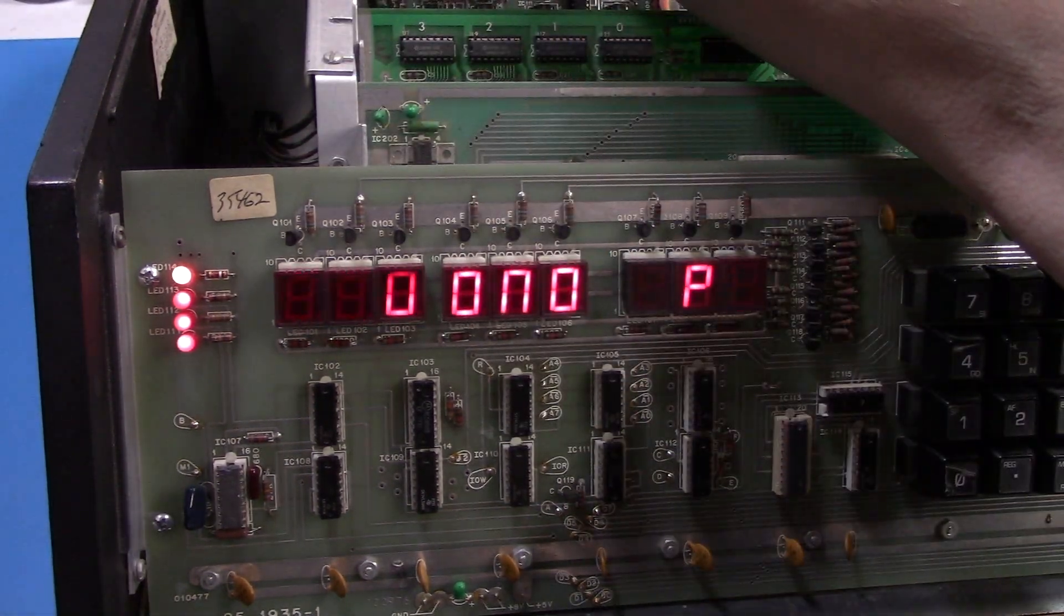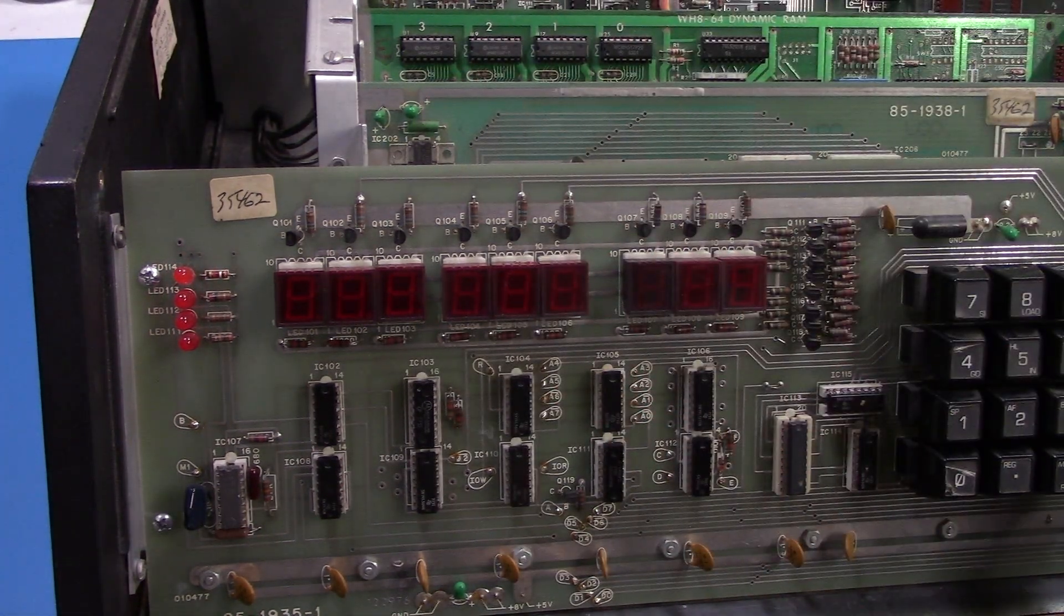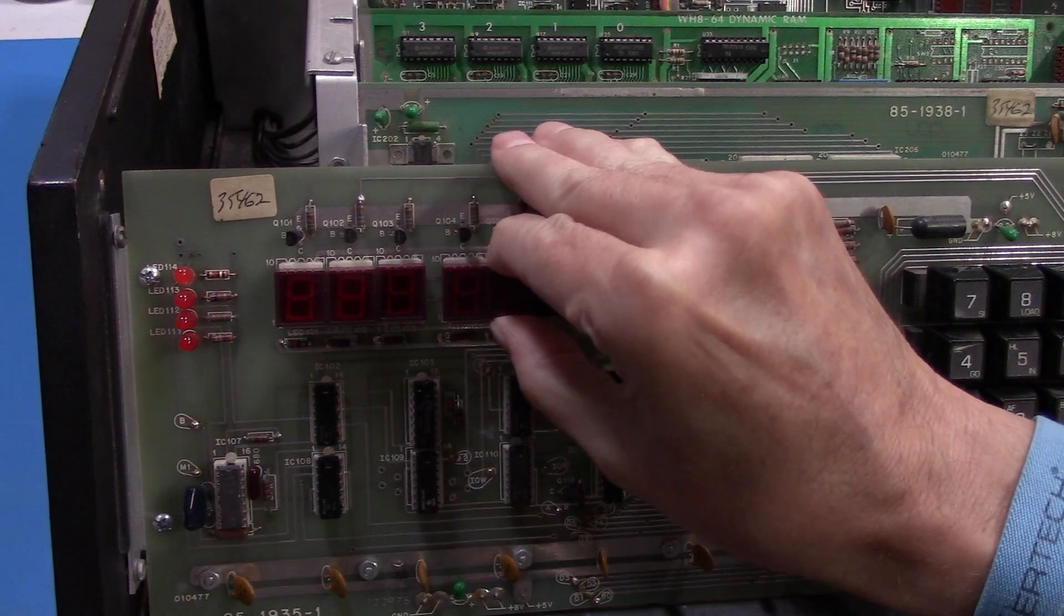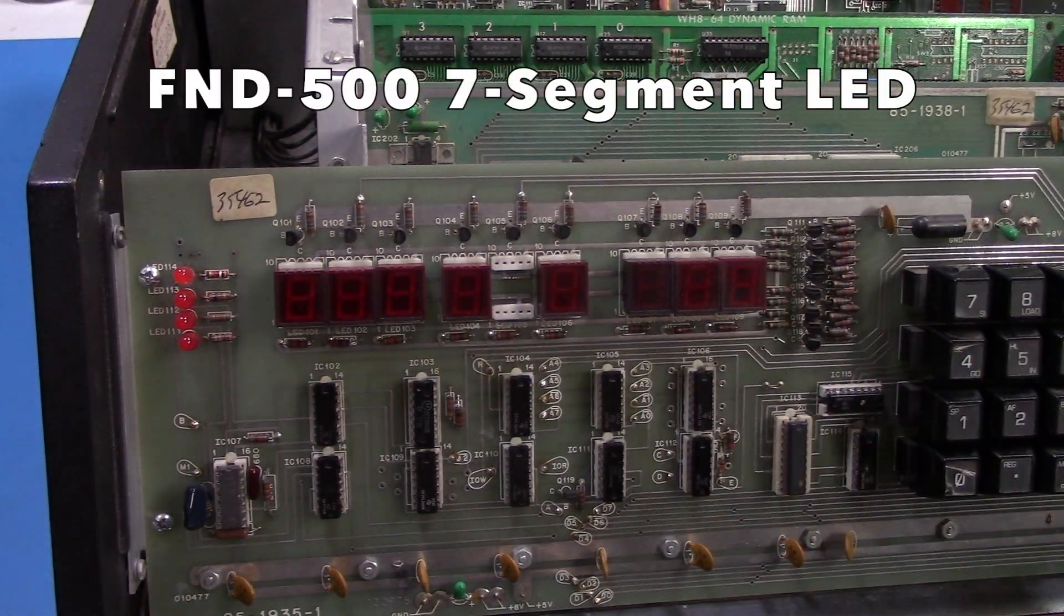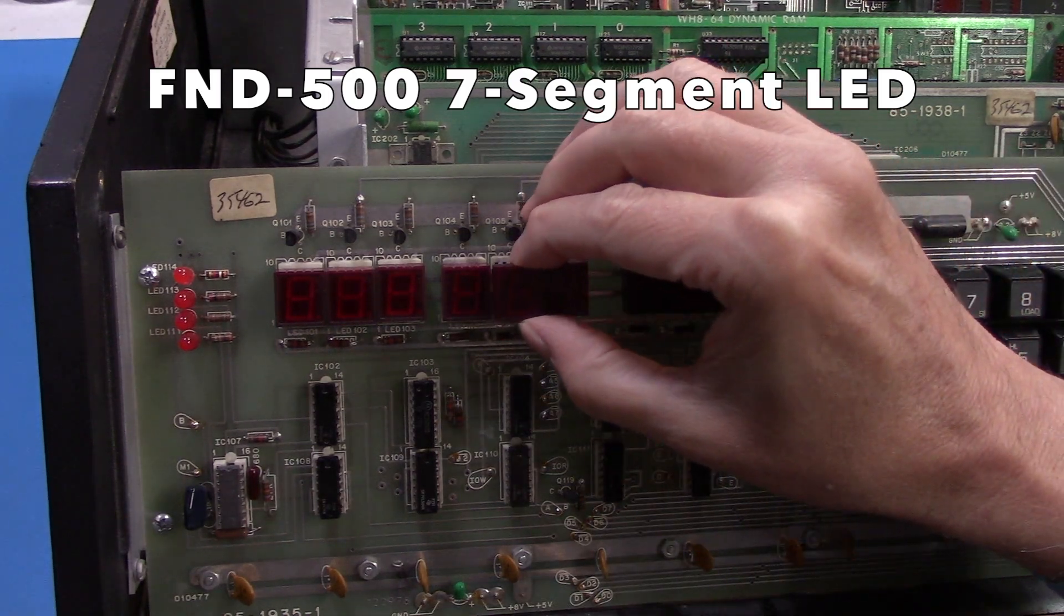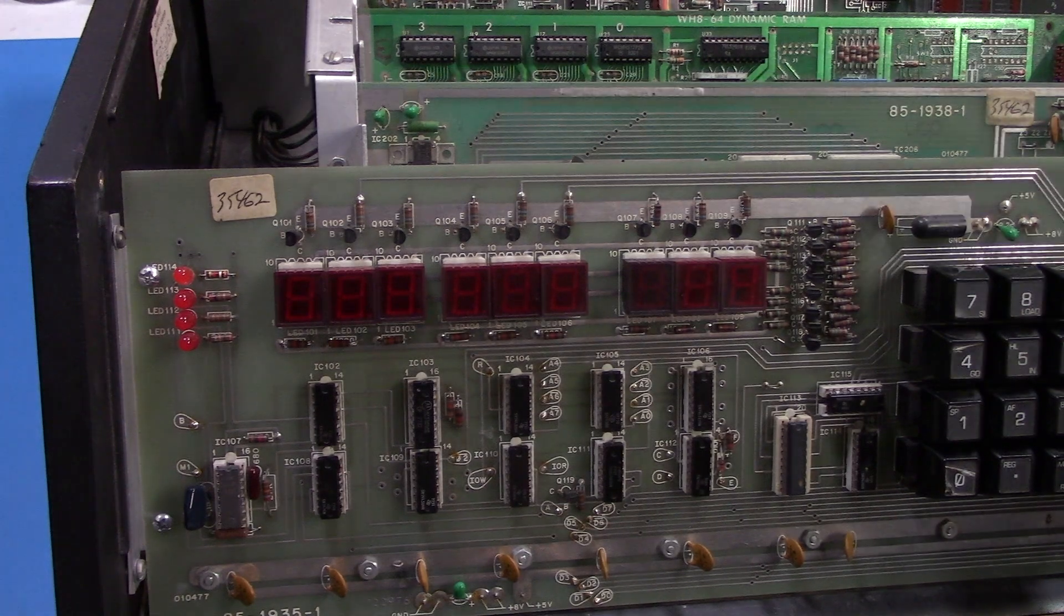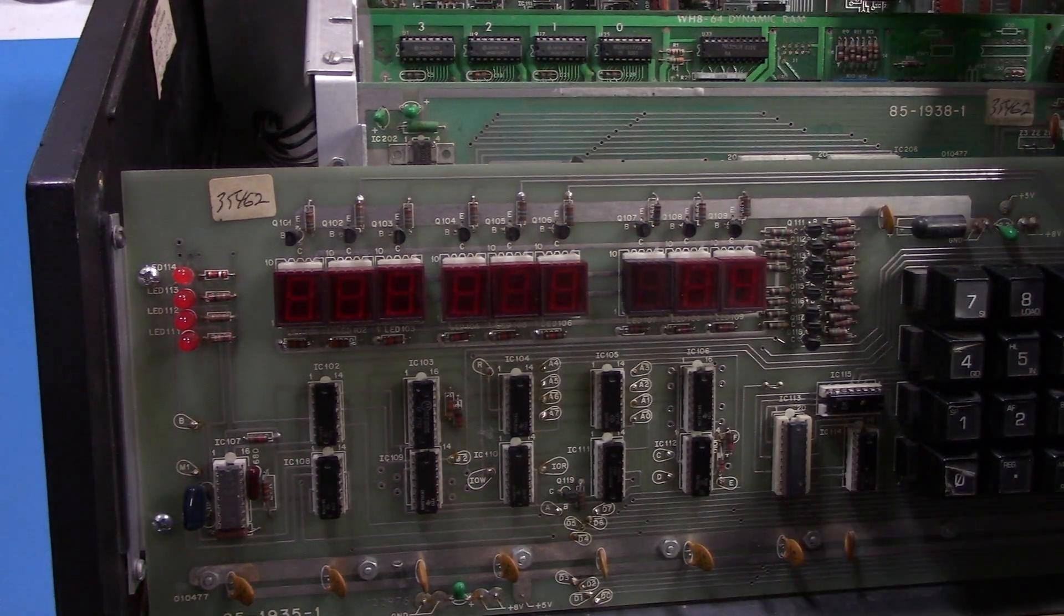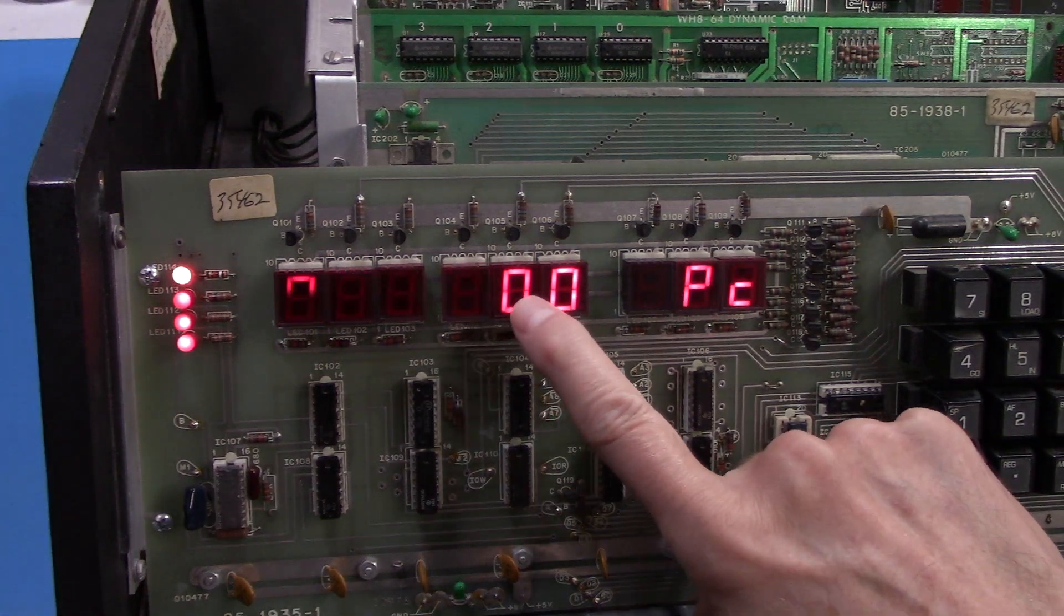One is really easy to see on the bottom, there's a missing segment. I was really lucky that I looked on eBay and for a fairly reasonable price I found a vendor that had replacements for these. The exact FND 500 seven segment LEDs that I needed for this. So I was thinking originally those were going to be really hard to source and I am very glad to have found them.